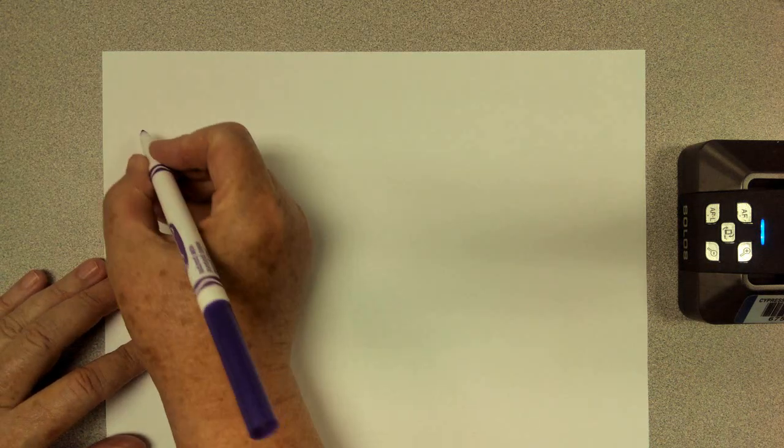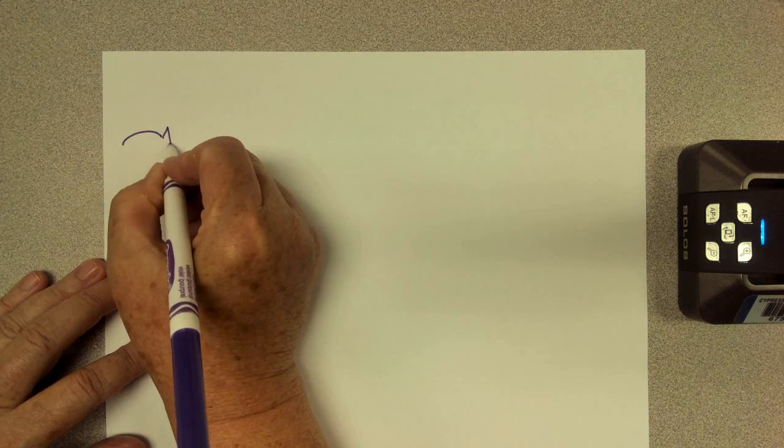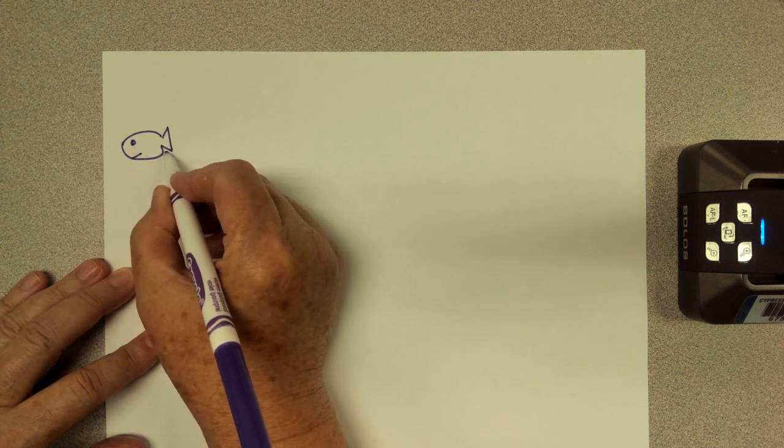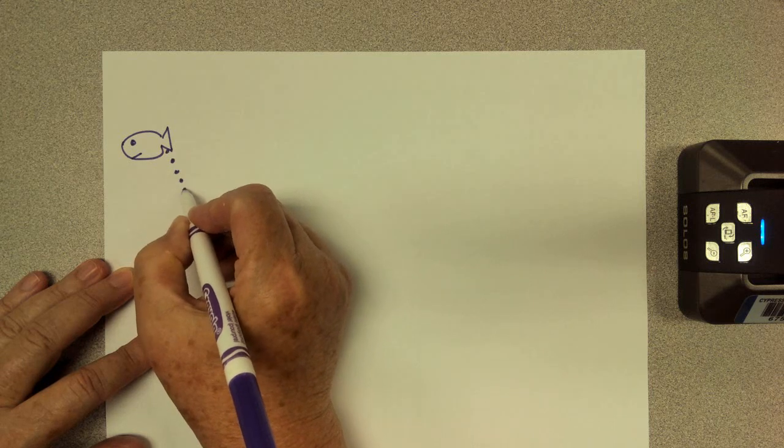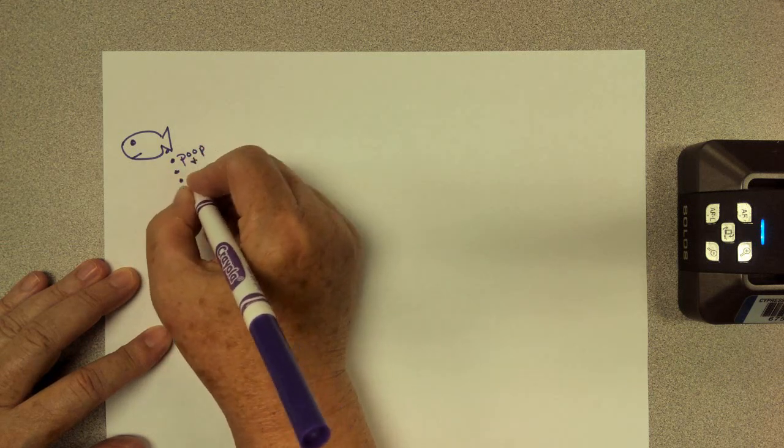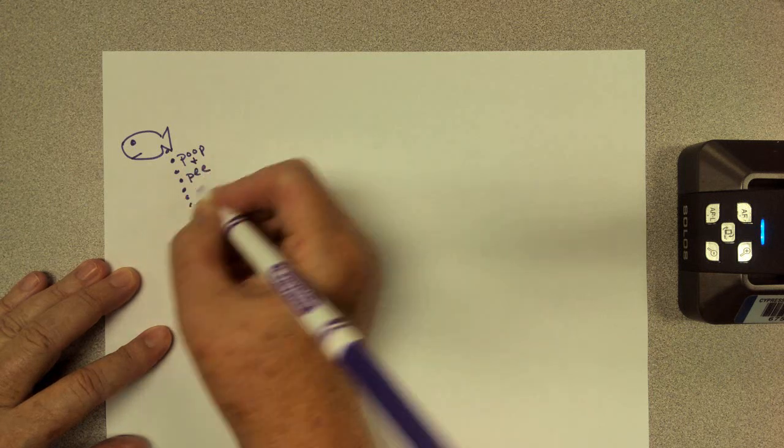Now, nitrogen in our tank is no different except it's not a complete cycle, so we have a dead end here. So first we have to ask ourselves, how does the nitrogen get into our fish tank? Well, I'm going to draw my little handy dandy fish here, and he's going to poop and pee. I know it's not technical, but you know what poop and pee is.